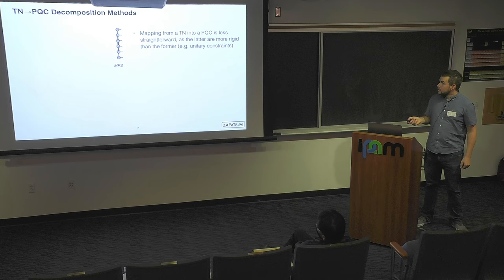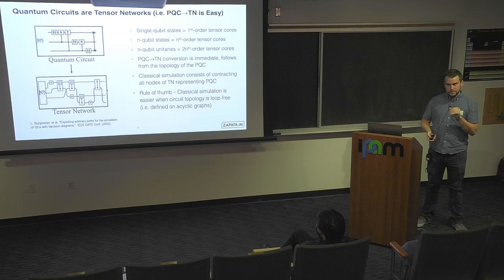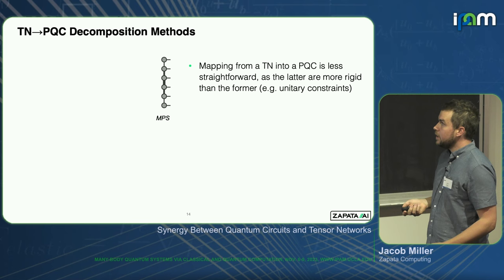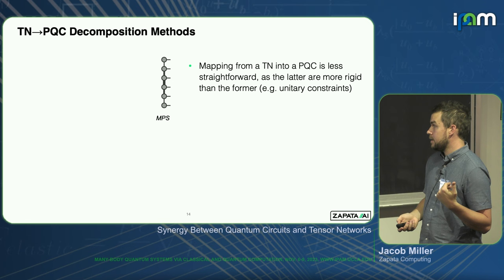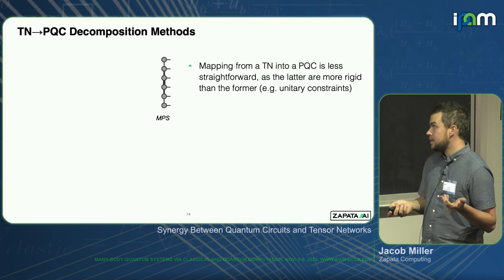Going the other direction — from tensor network to quantum circuit — is harder. Even though every parameterized quantum circuit is a tensor network, not all tensor networks are quantum circuits, because all gates have to be unitaries and tensor cores are not generally going to be like that.